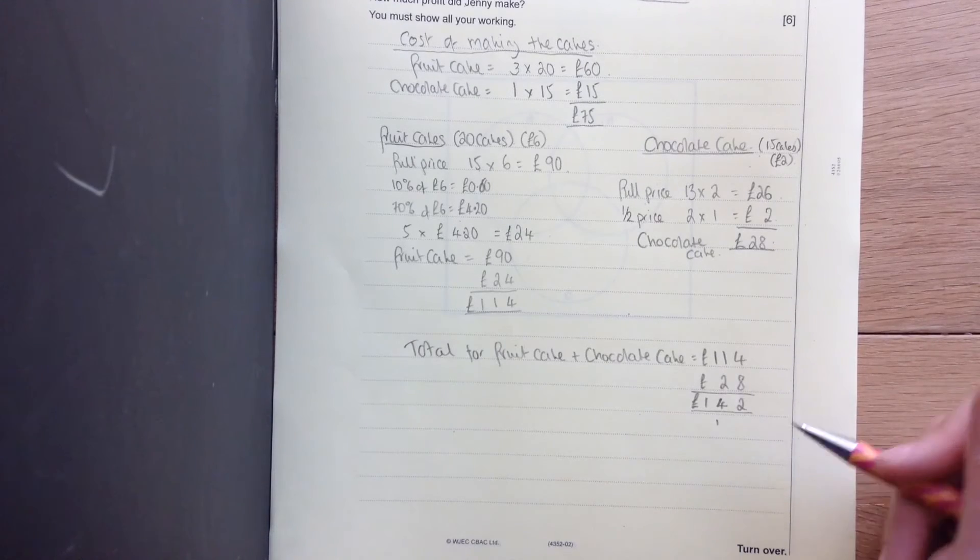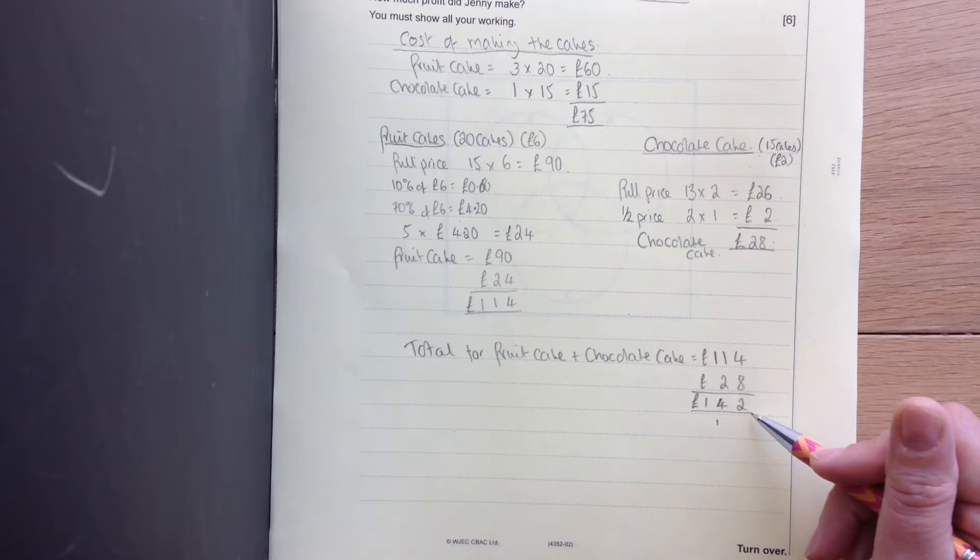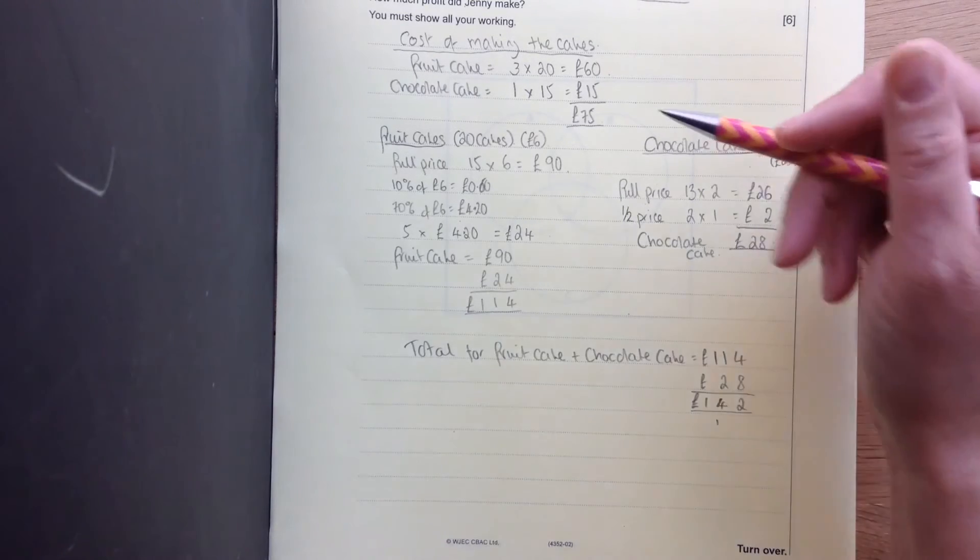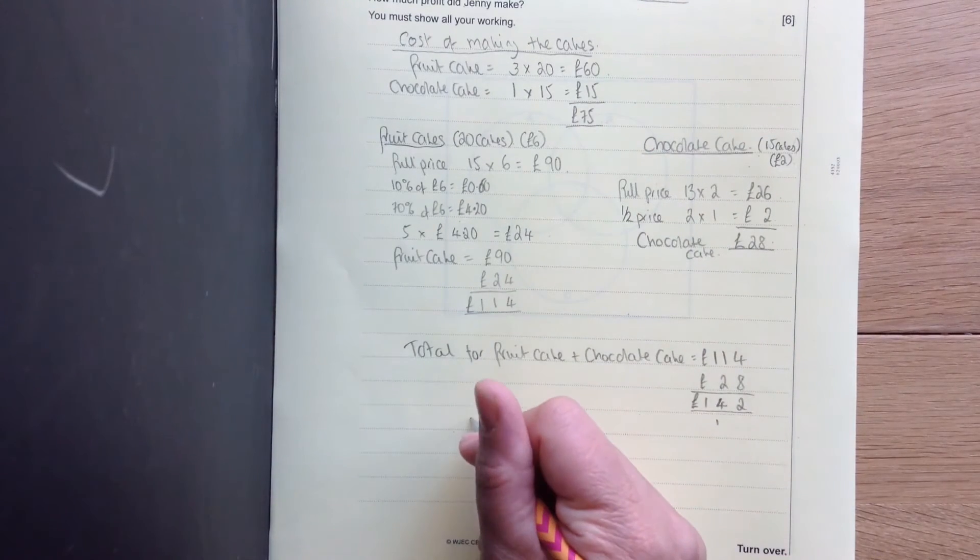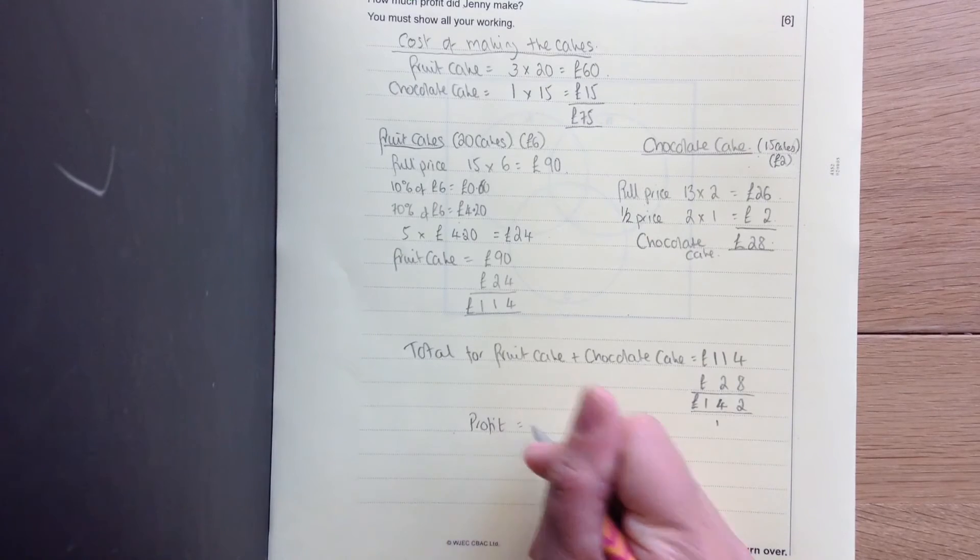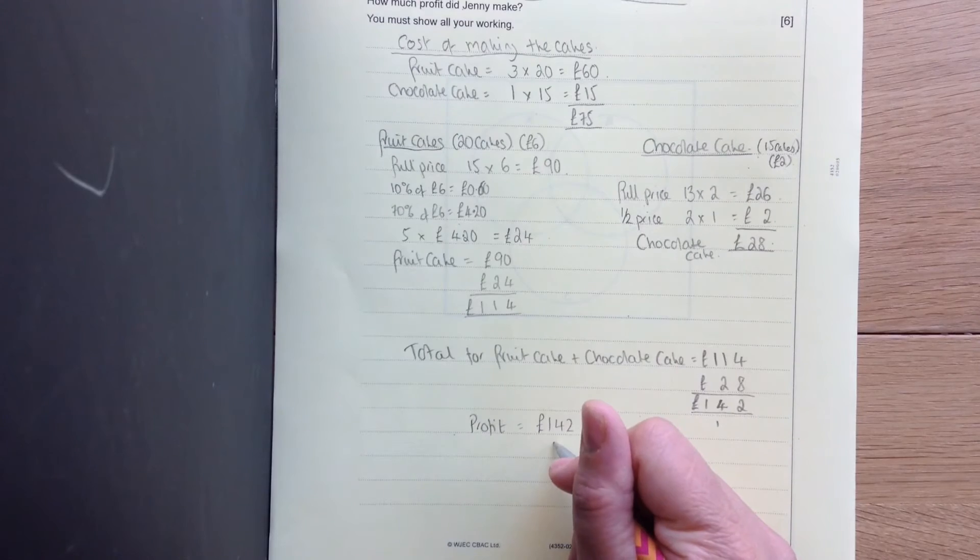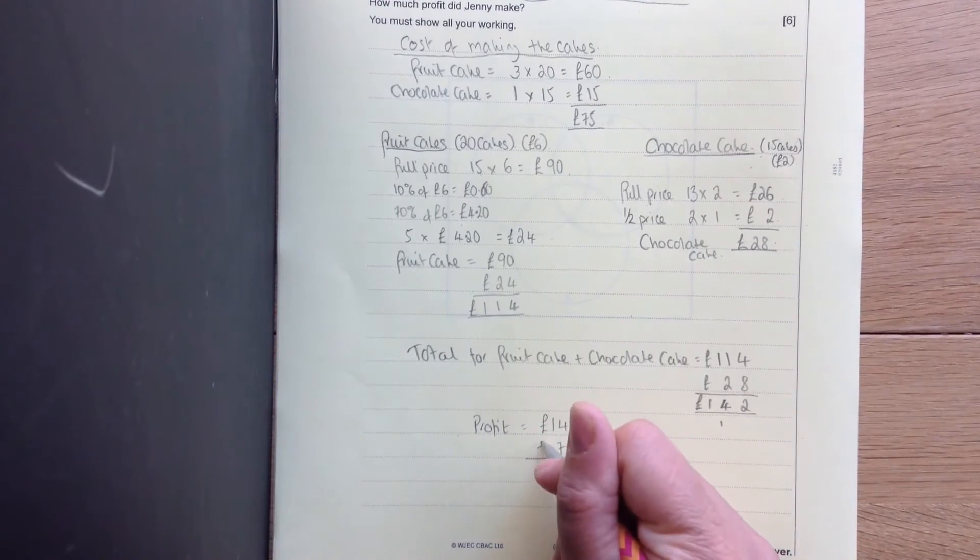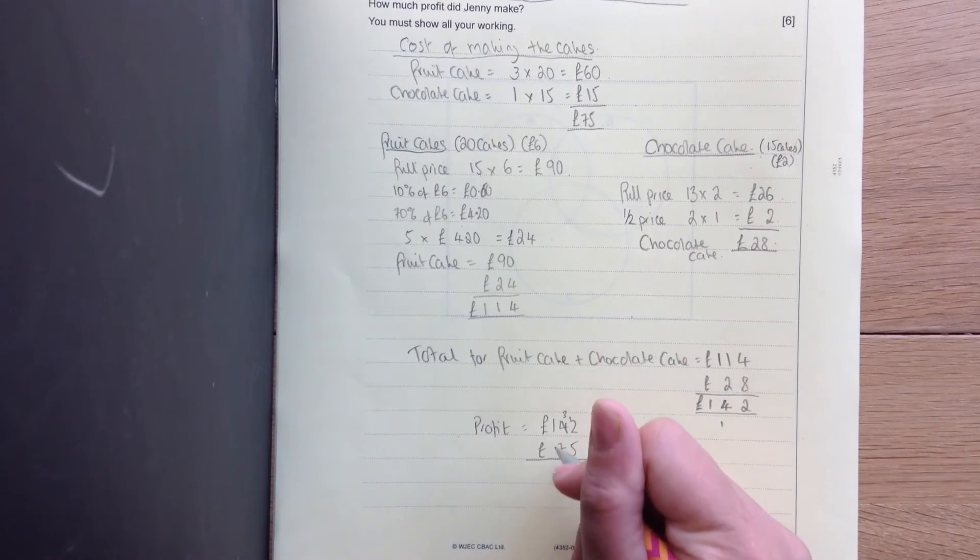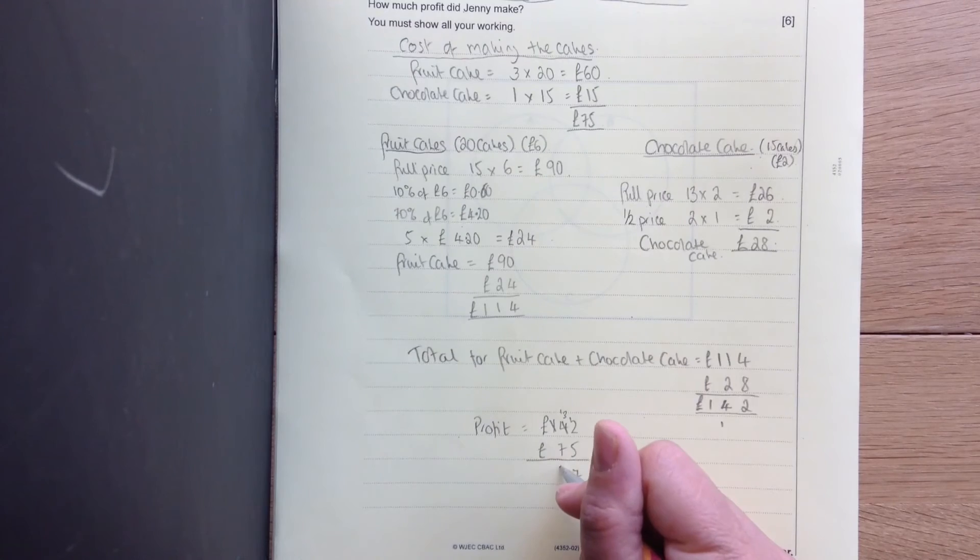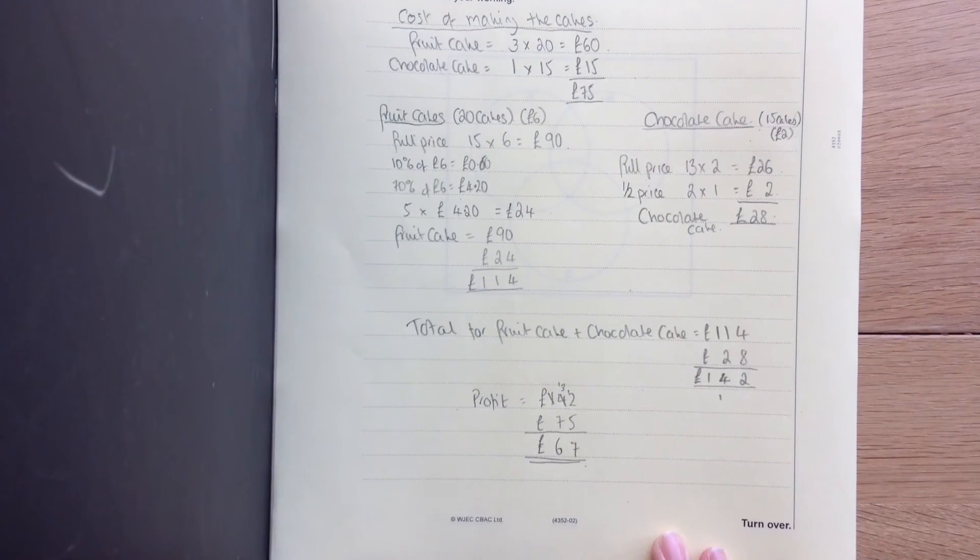On the day in the market then, Jenny sold £142 worth of goods but she'd spent £75 on making the cakes to begin with. So a profit, overall profit is £142 take away the cost of making the cakes. 5 from 2 you can't do. 7 from 3 you can't do. £67. So the final profit was £67.